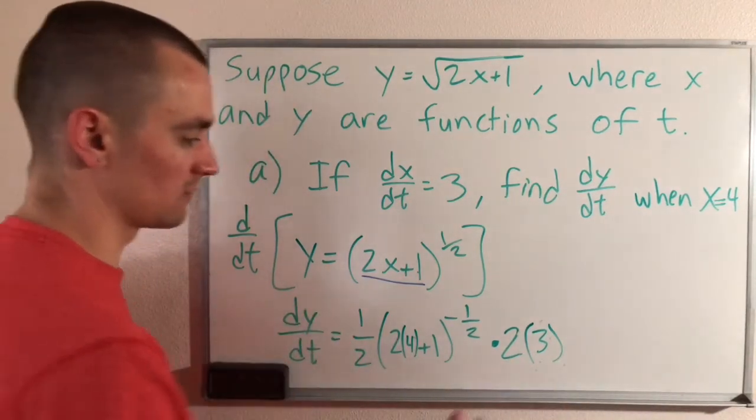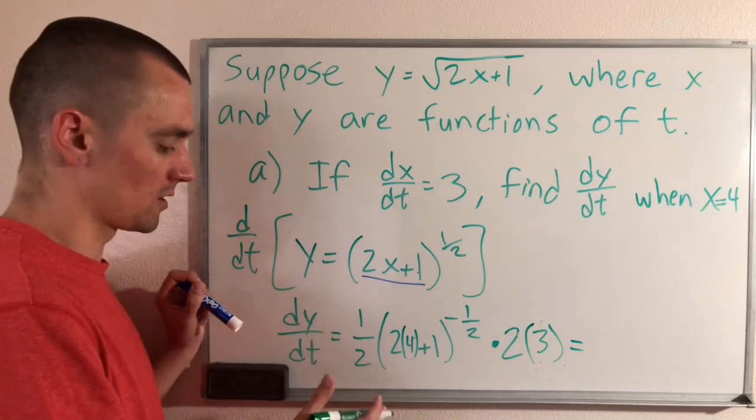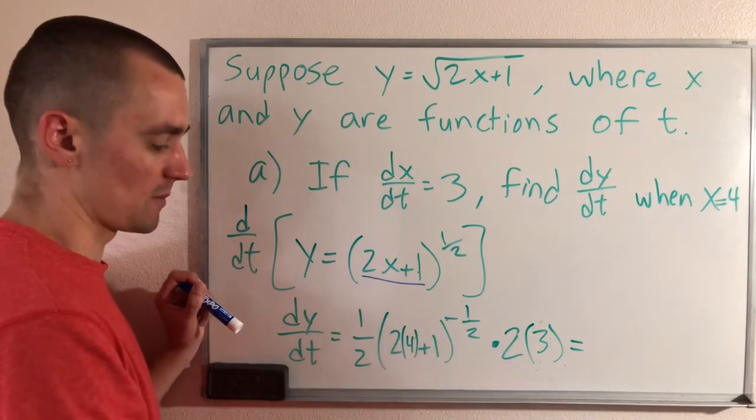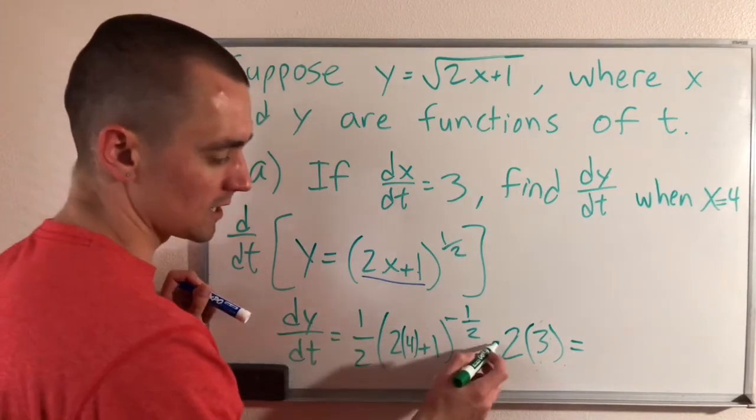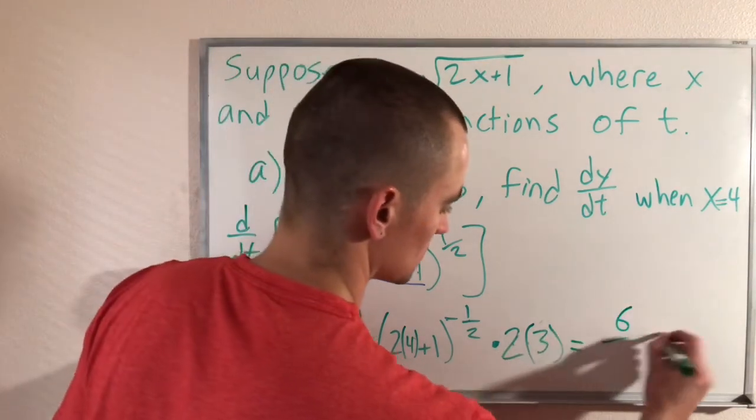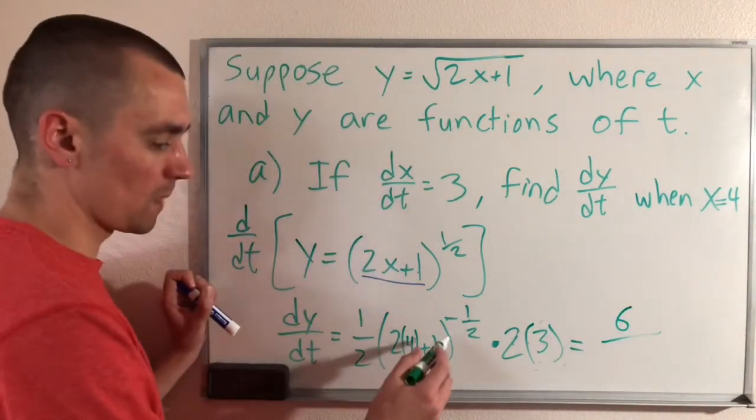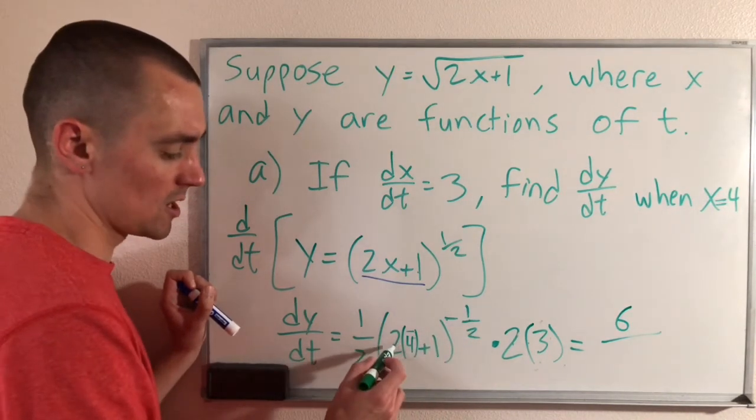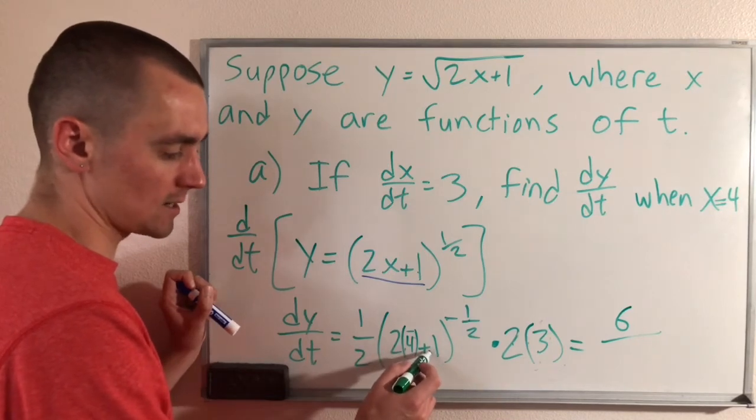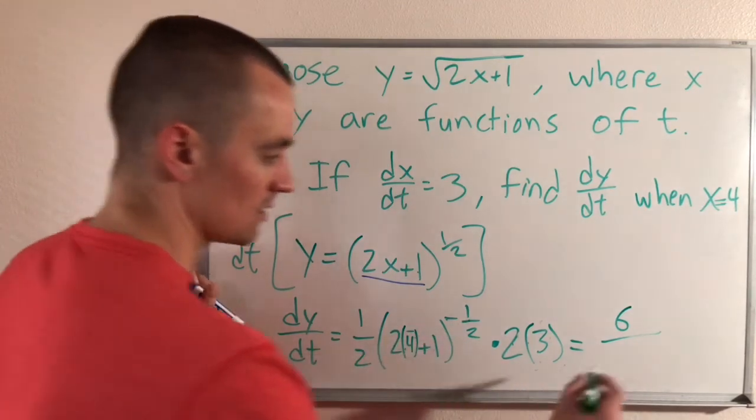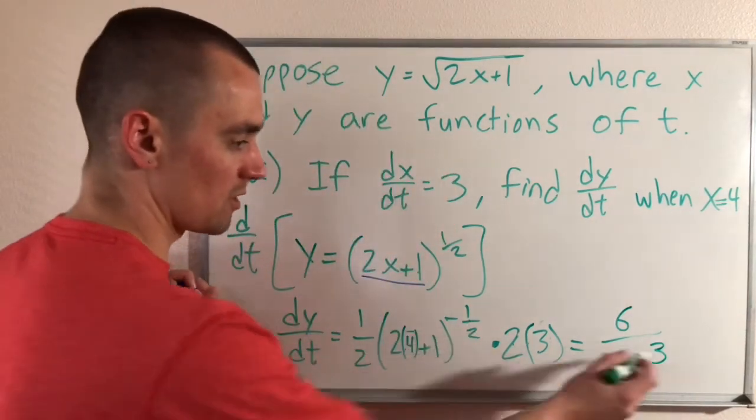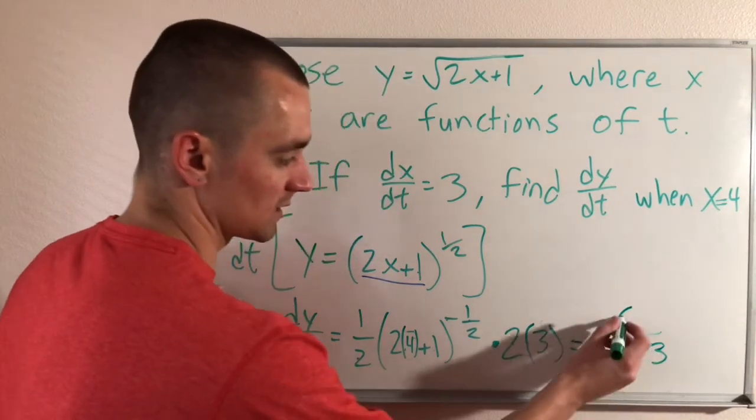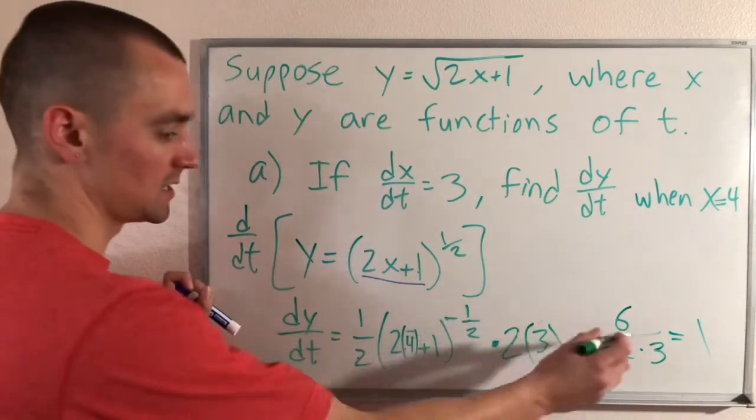So doing that is just going to give us... Let's think about what we have on our numerator and our denominator. Having this be to the negative 1/2 means that this is essentially on our denominator. So on our numerator, we're just going to have 1 times 2 times 3, so that's just going to be 6. On our denominator, we're going to have all this being raised up to the 1/2, which is the same as taking the square root. So 2 times 4 is 8 plus 1 is 9. The square root of 9 is 3. So all this gives us a 3 on the denominator. And then we also have this 2 on our denominator. So 2 times 3 is 6. 6 over 6 is 1. So dy/dt is 1.